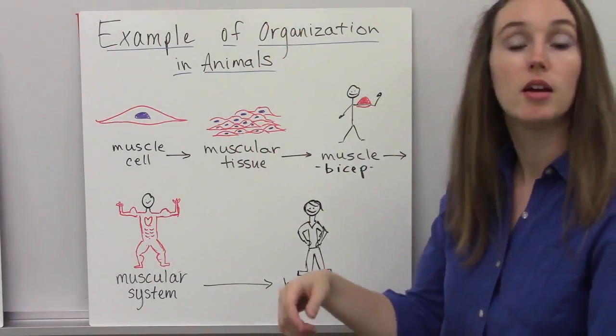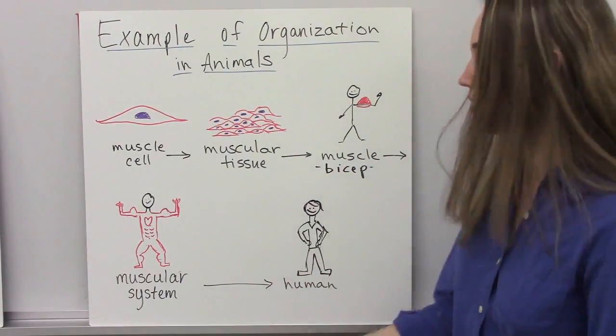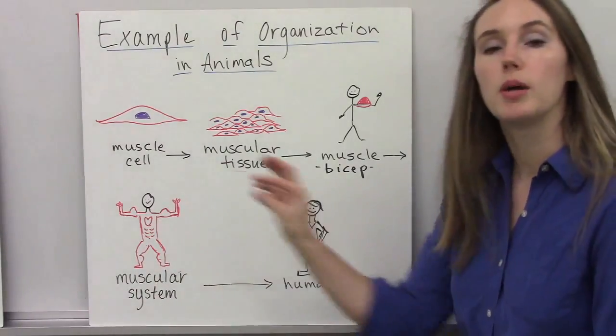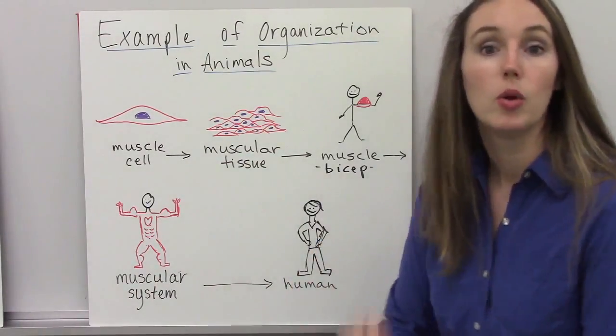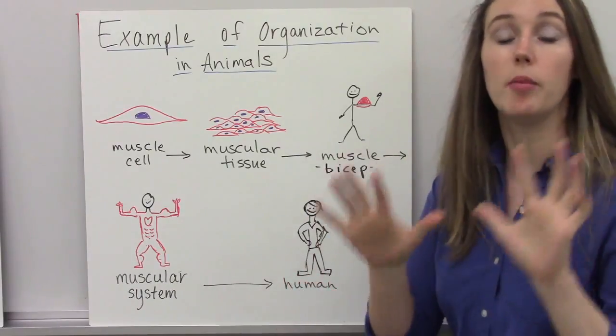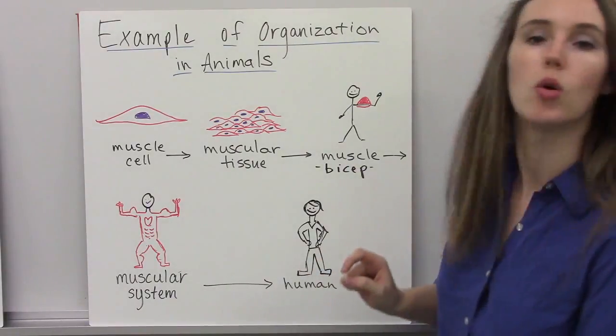And when I put my biceps together with all the other muscles in my body, it makes the muscular system. And when I put the muscular system together with the nervous system, digestive system, respiratory system, and all the others, it makes a complete human being, one complete organism.